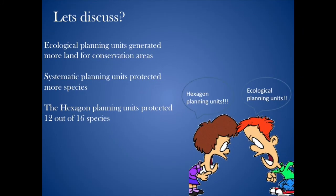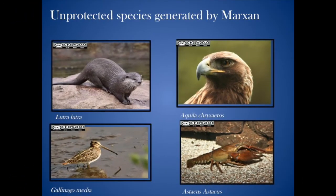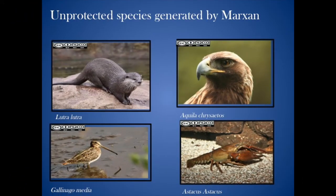Using both the ecological and systematic approaches, there were differences that existed in the results produced by Marksen. Firstly, the ecological conservation approach generated more land conservation areas than the systematic approach. The systematic approach, however, protected more species than the ecological planning units. The systematic approach was able to protect 12 out of the 16 species. The four species unprotected are Lutra lutra, Gallinago media, Astechus astechus, and Aquila chrysaetos.